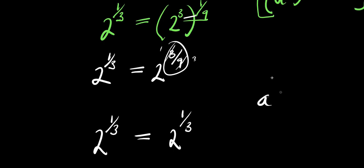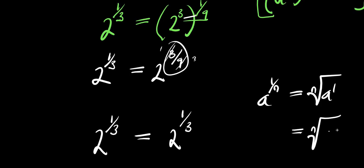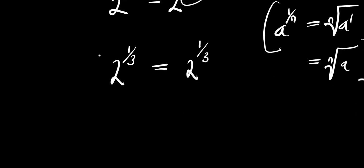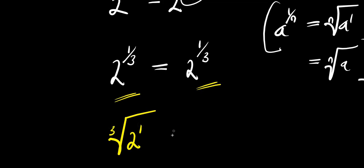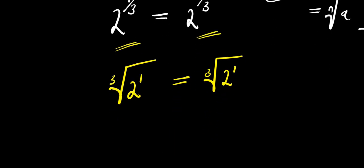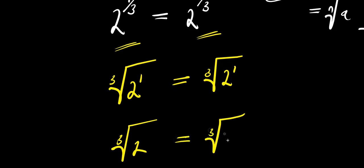Now if you have a to the power of 1 over n, this equals the nth root of a. So we can apply this identity to both sides. We have cube root of 2 to the power of 1 equals cube root of 2. So cube root of 2 equals cube root of 2. Both sides are the same.